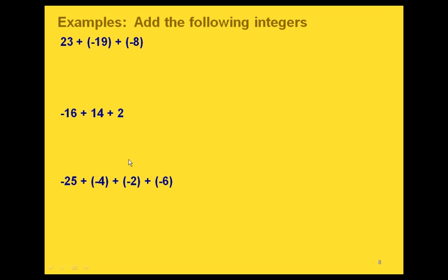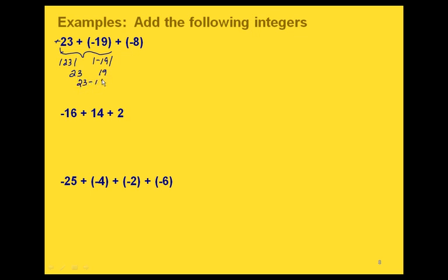Here are some more problems to do. Notice these ones have more than two numbers that we're adding. Since we're adding, we still have the commutative property, which means we can switch the order of the numbers if needed. Let's start by adding positive 23 and negative 19. We have our absolute values, and notice we have numbers with two different signs. The larger of the two is the 23, so we take 23 minus 19, which gives us 4. The sign goes with the larger, which was a plus. So that gives us positive 4.